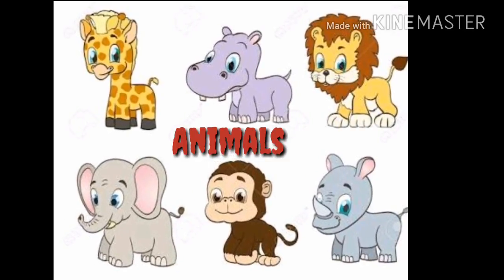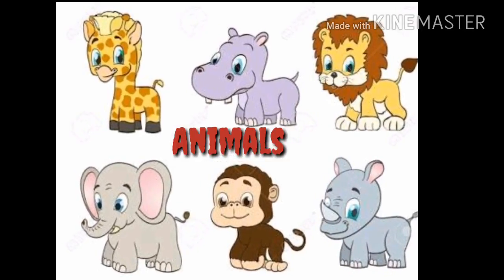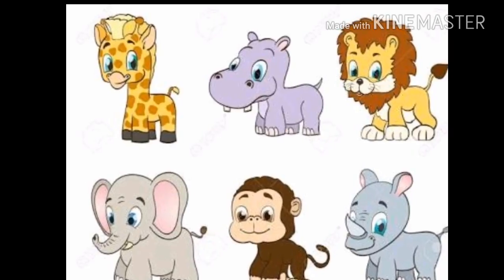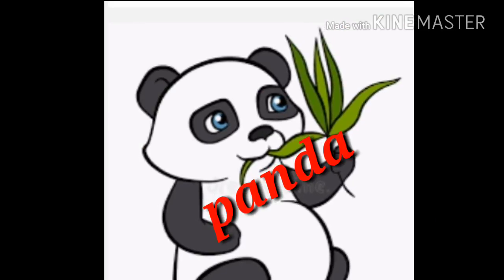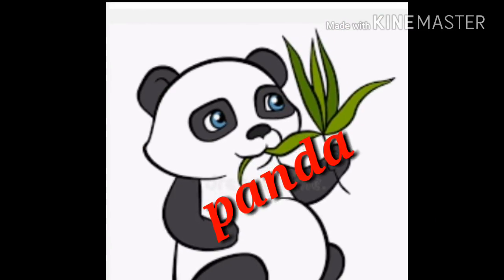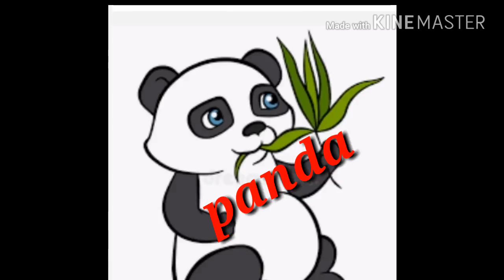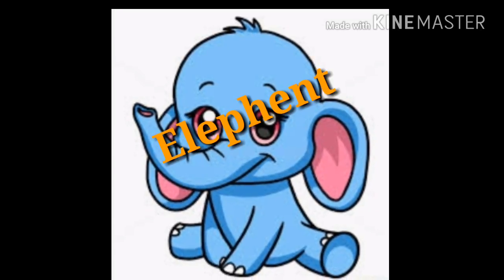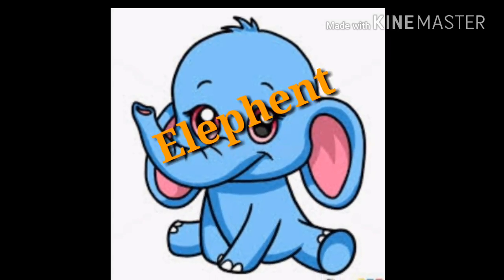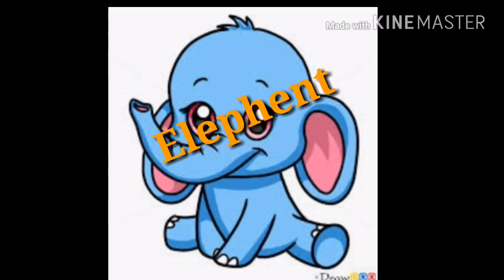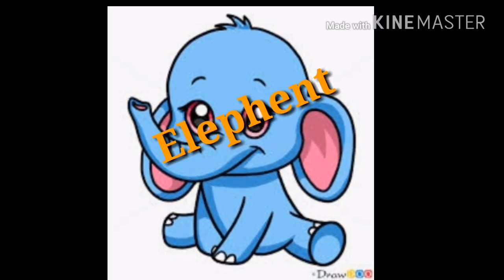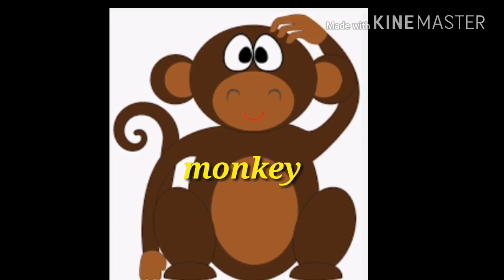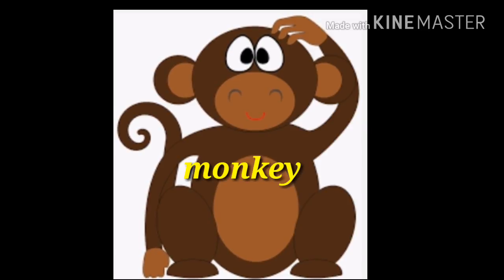Animals. E for Panda — Panda's color is black and white. E for Elephant — Elephant's color is blue. M for Mungy — Mungy's color is brown.